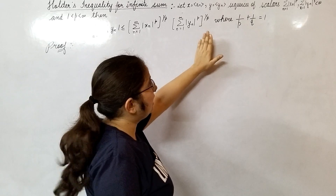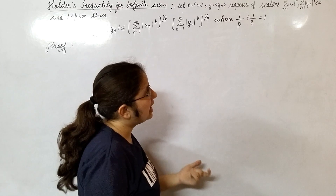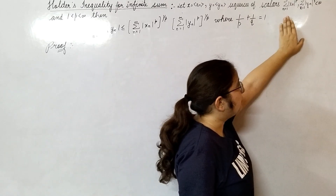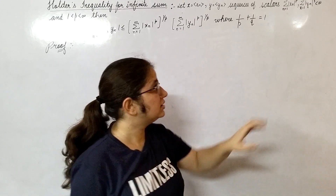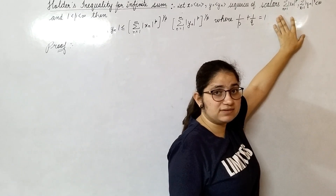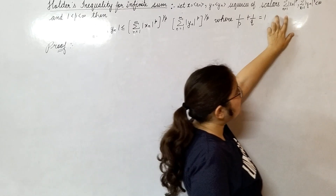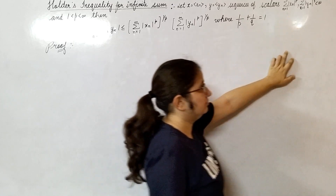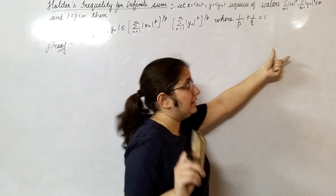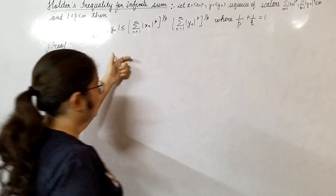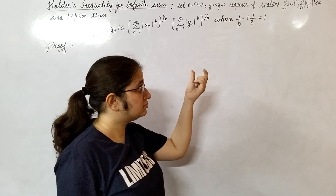Let x equal the sequence (x_n) and y equal the sequence (y_n), and both sequences are sequences of scalars. This implies that both the sequences are bounded — that is, both series are bounded. This statement is very, very important.